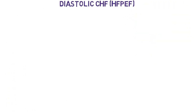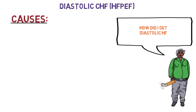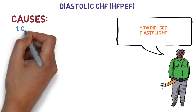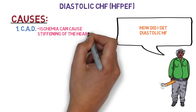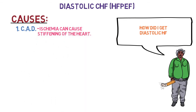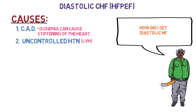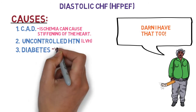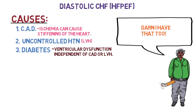Why does diastolic heart failure occur? The causes include: number one, coronary artery disease — ischemia can cause stiffening of the heart; number two, uncontrolled hypertension, which can cause left ventricular hypertrophy; and number three, diabetes, which can cause ventricular dysfunction independent of coronary artery disease or LVH.